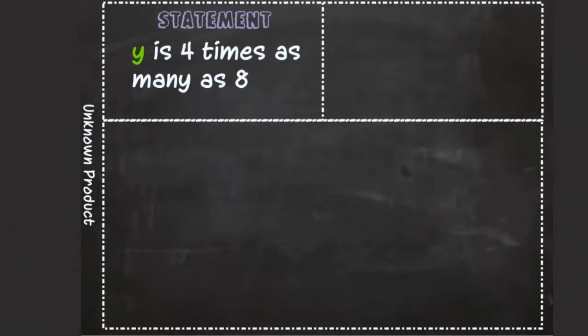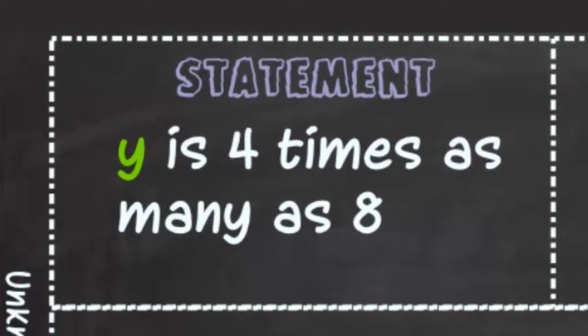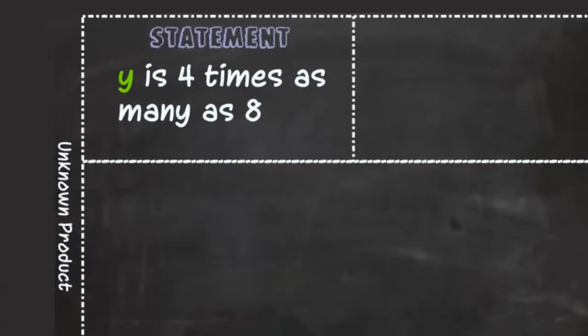This statement suggests there is an unknown product. y is 4 times as many as 8. y is your unknown product.